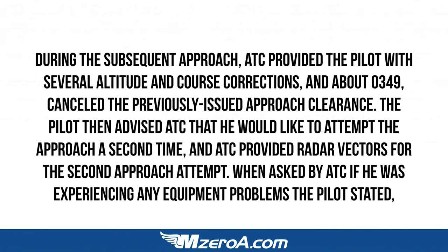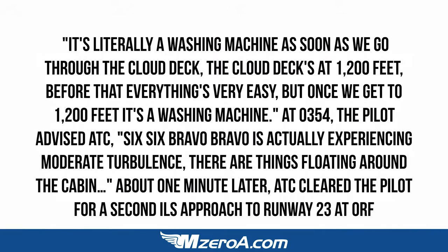I want to hear in the comment box below what you think could have been done differently. During the subsequent approach, ATC provided the pilot with several altitude and course corrections and around 0349 cancelled the previously issued approach clearance. The pilot advised ATC he'd like to attempt the approach a second time, and ATC provided radar vectors. When asked if he had equipment problems, the pilot stated: 'It's literally a washing machine as soon as we go through the cloud deck. The cloud deck's at 1,200 feet — before that everything's very easy, but once we get to 1,200 feet, it's a washing machine.'